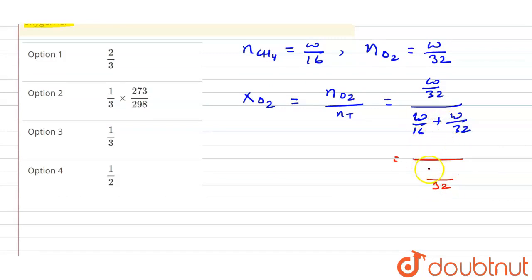So 32 will get cancelled out, w also will get cancelled out, so mole fraction will be equal to 1/3.